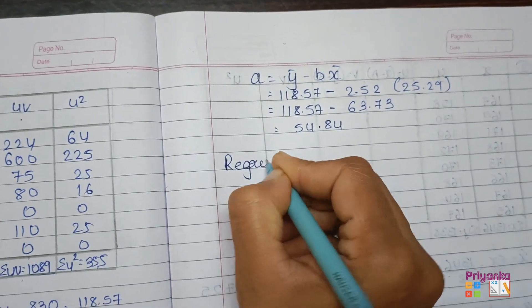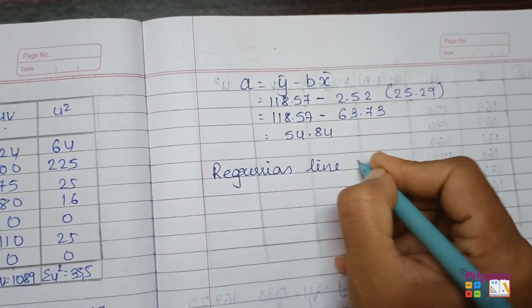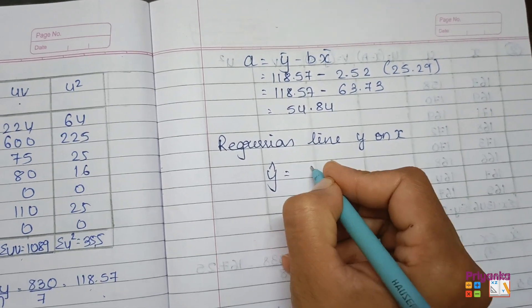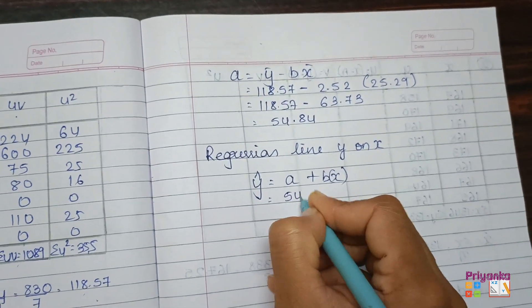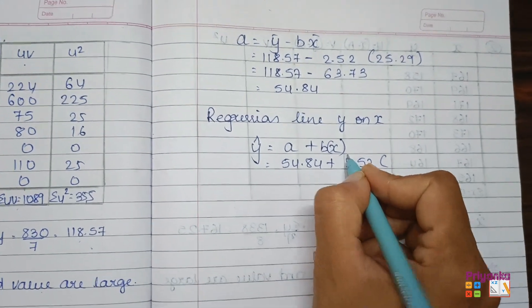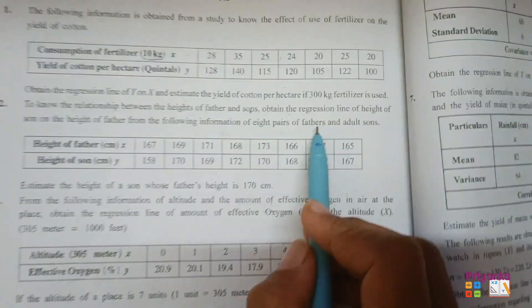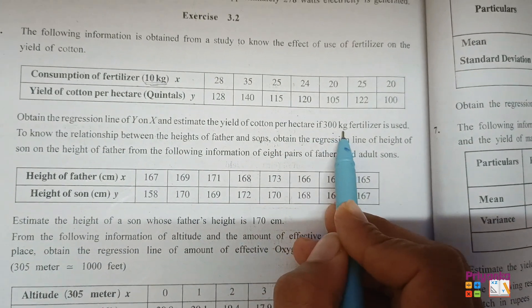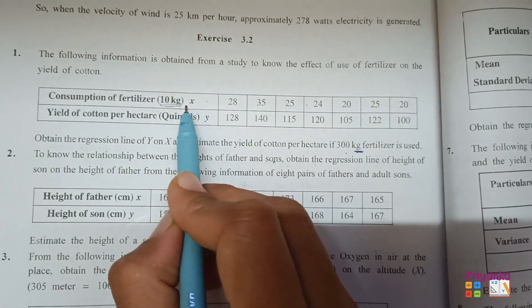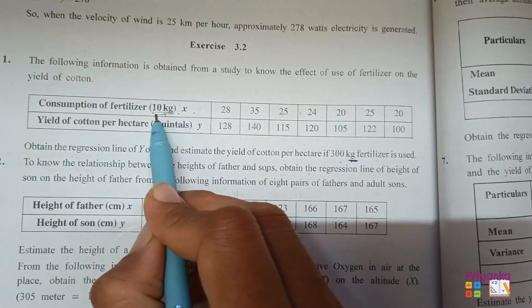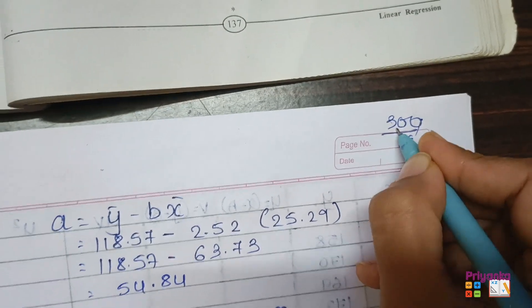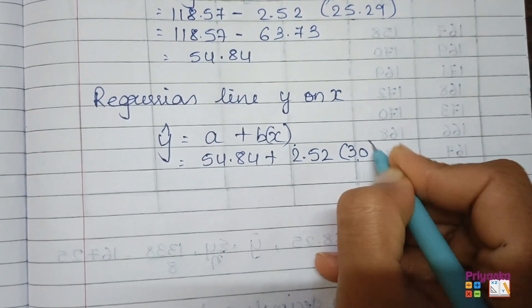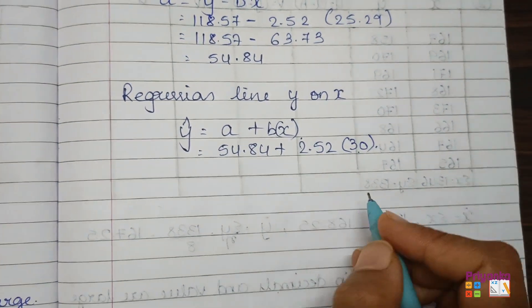Now the last step is to find the regression line y on x: ŷ = A + Bx = 54.84 + 2.52x. For x, the question asks for 300 kg of fertilizer. But note that the x values in the data are given in units of 10 kg, so 300 kg corresponds to x = 30. Don't take 300 directly — check the units carefully.